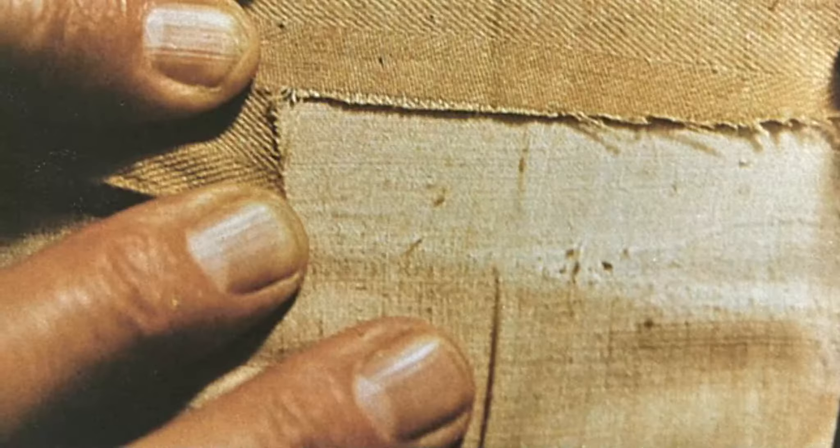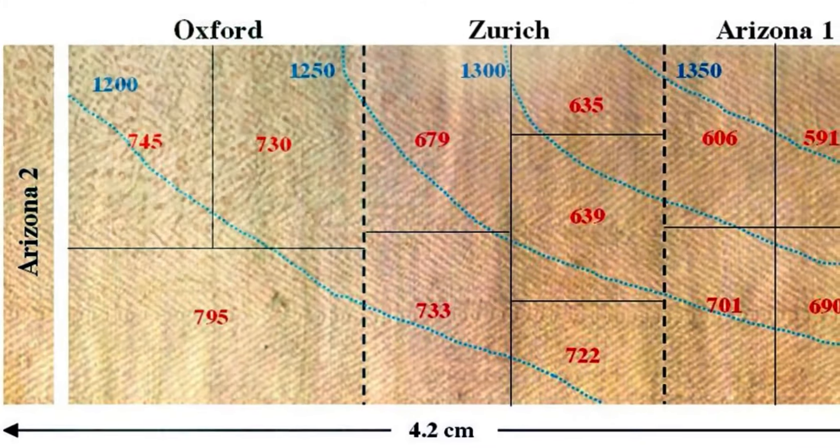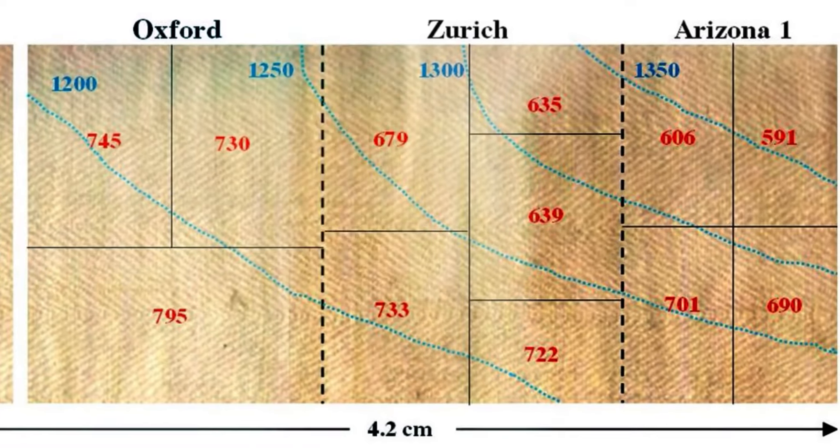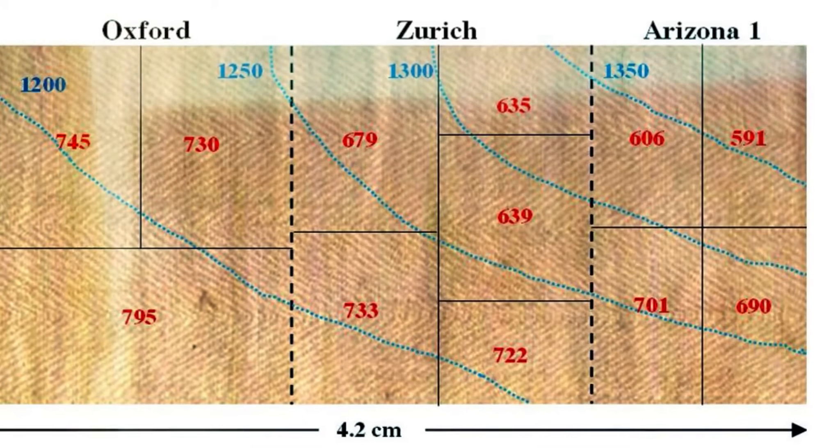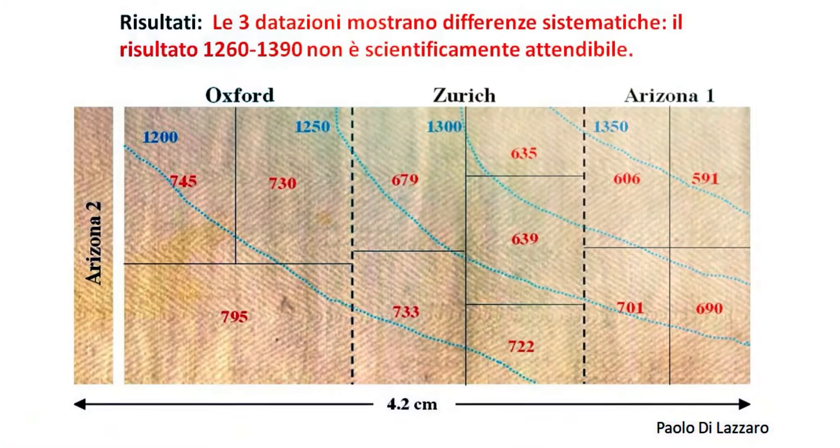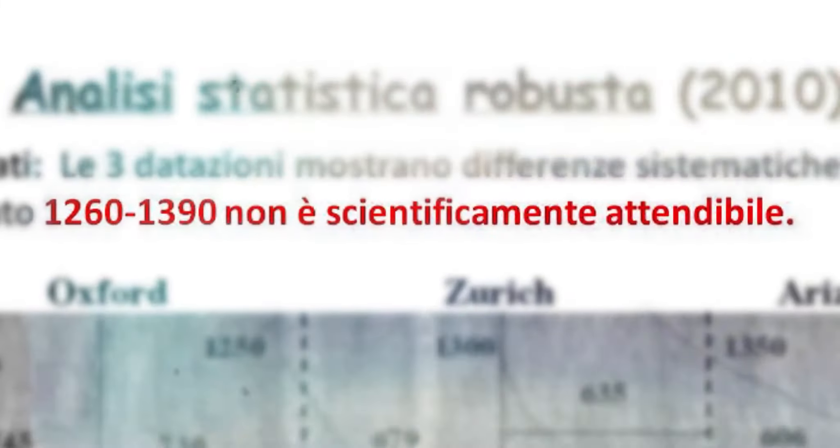Le misure a radiocarbonio sono state effettuate nel 1988 utilizzando un apparato molto complesso chiamato AMS, il quale era in qualche modo agli albori della sua vita scientifica. L'analisi statistica robusta effettuata recentemente, a partire dal 2010, dei risultati del 1988 mostra che le tre misure dei tre laboratori, prese separatamente, è come se appartenessero a lini diversi fra loro, quindi poco compatibili le une con le altre.